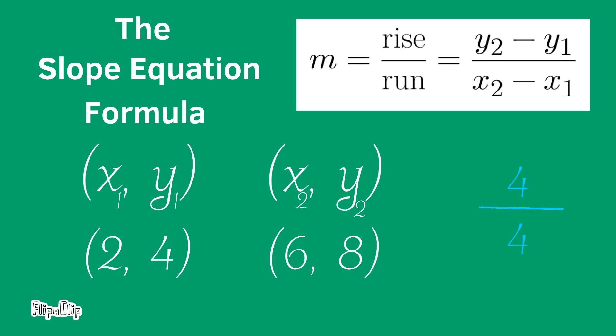8 minus 4 is 4, and 6 minus 2 is also 4. That's all there is to it. The line that these coordinates represent has a slope of 4 over 4. And 4 over 4 is the same as 4 divided by 4, which is 1. So the slope of the line is 1.